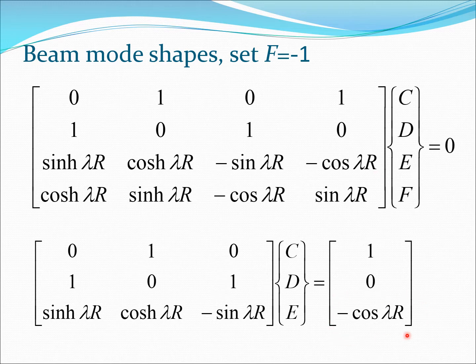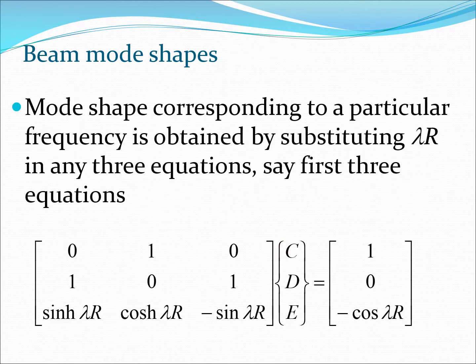So once we have obtained this solution we are going to move down further and get all these values. Before that we'll just make the generic statement that mode shapes corresponding to a particular frequency are obtained by substituting lambda r in any three equations.